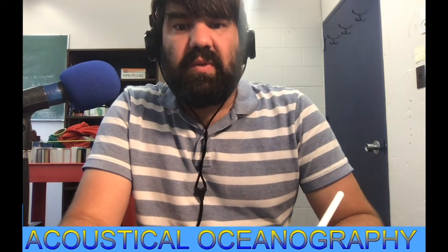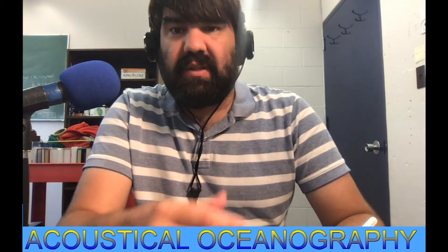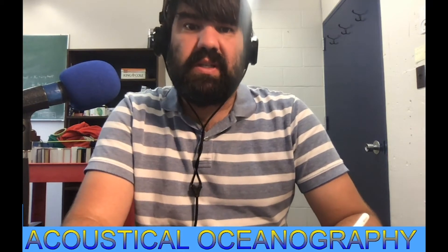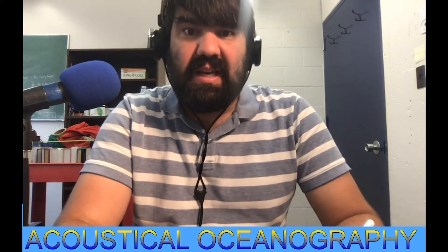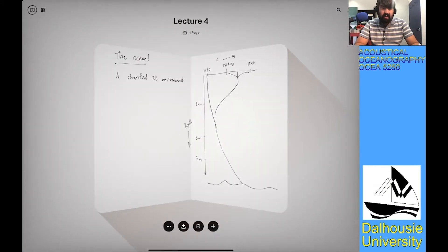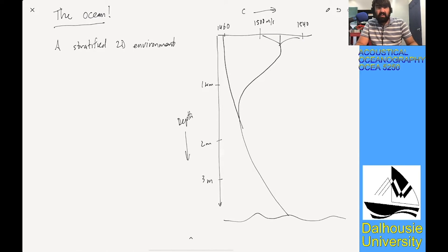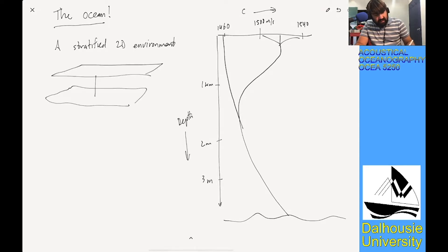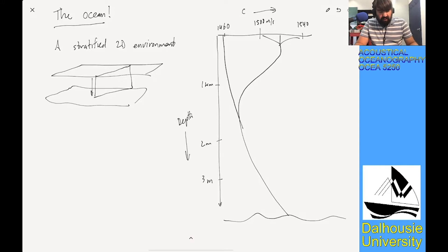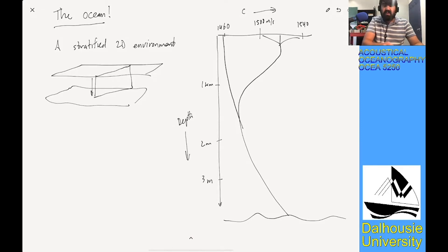Last lecture, we solved the wave equation in 1D and 3D, looking at it in Cartesian and spherical coordinates. We really skipped over 2D, and that's a little funny, because when we think about the ocean, it's very easy to think about it in terms of a stratified 2D environment. We should be focusing on the 2D solution to the wave equation.